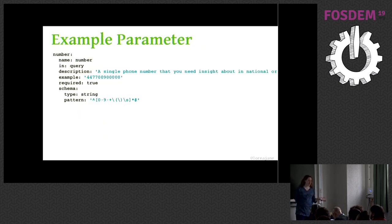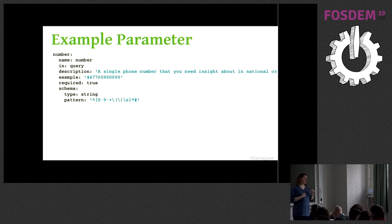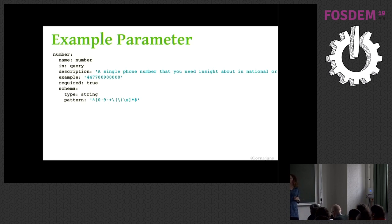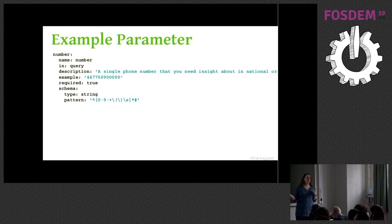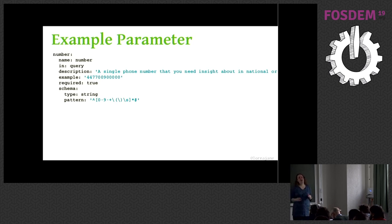Here's one of the parameters — this is the number parameter. We say this is in the query string. We've got a description of it, we've got an example. The example shows you the format that the number needs to be provided in. It is a required field because I can't give you insight into a phone number if you don't give me a phone number — this would make no sense. So number is a required field, and there are some rules about how it must be formatted.